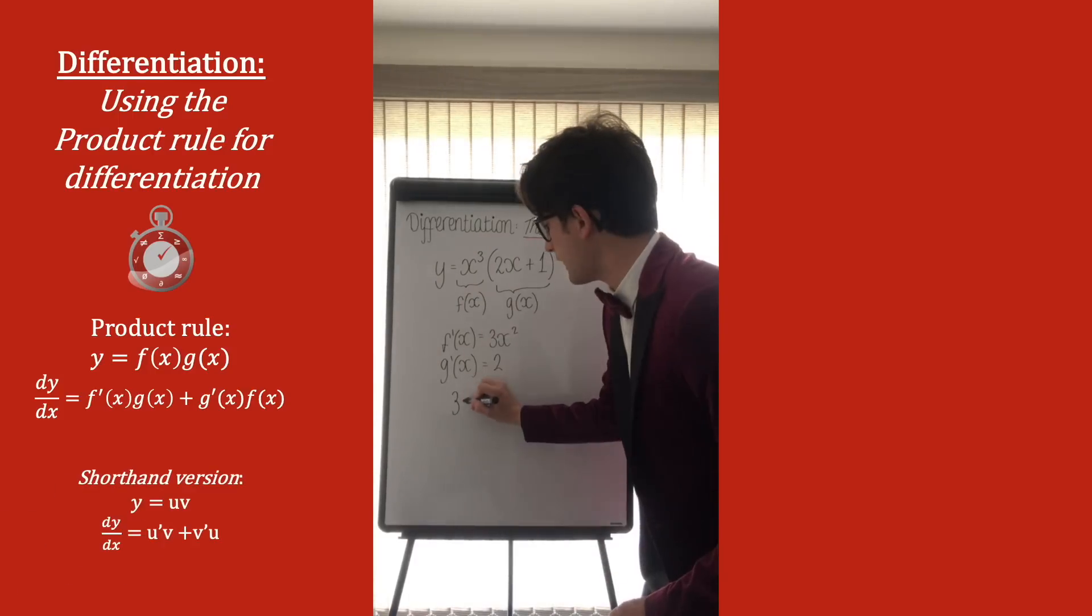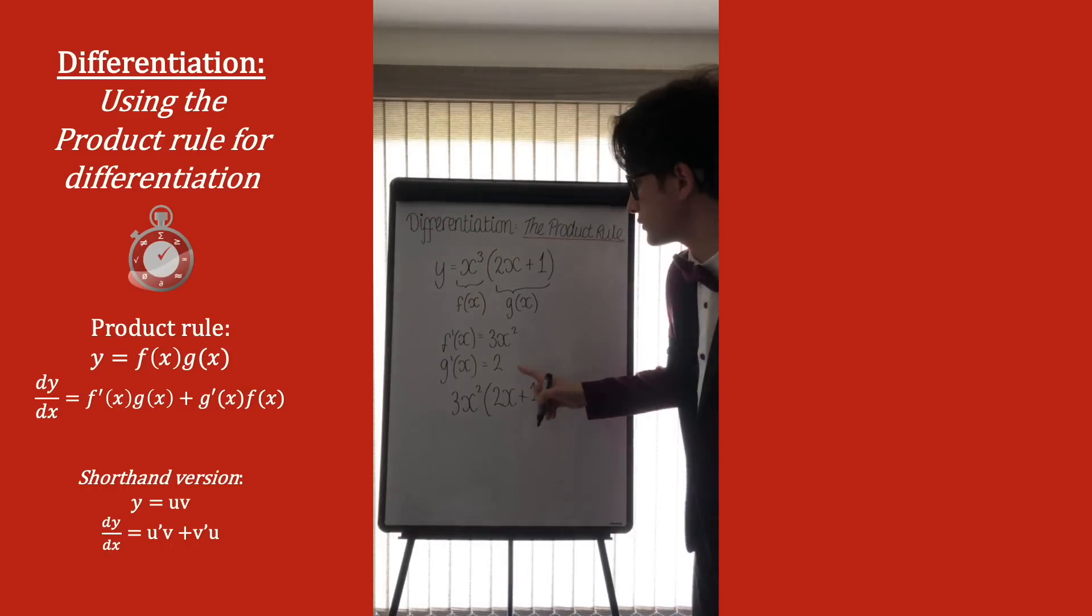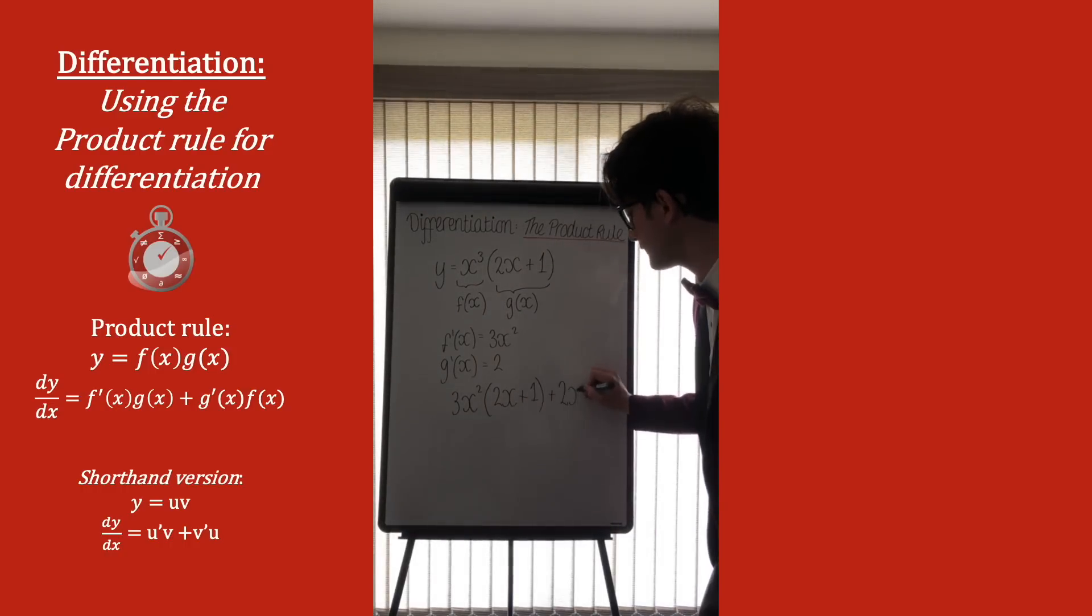f dash x times g of x is 3x squared times 2x plus 1, add the other way round, which was 2 times the original x cubed, so 2x cubed.